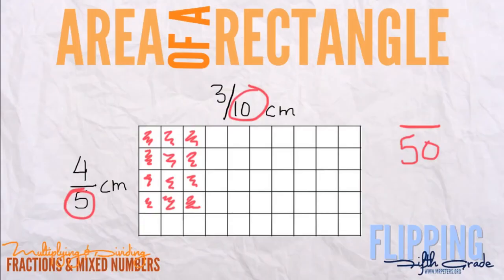And we're going to count the number here. So we have one, two, three, four, five, six, seven, eight, nine, ten, eleven, twelve.